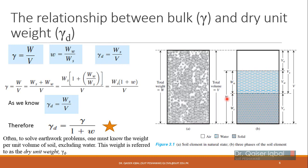For dry soil, total weight W = Ws since Ww = 0. We also know moisture content w = Ww/Ws, meaning weight of water equals w times weight of soil solids. These relations will be used to derive the correlation between bulk unit weight and dry unit weight.